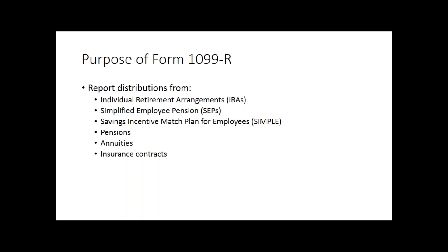Just as a reminder, the 1099-R reports distributions from certain types of plans. The predominant ones we'll see are individual retirement arrangements — IRAs — as well as simplified employee pension plans (SEPs) and SIMPLE plans. All of those are retirement plans held by the employee. We may also see pension plans. A pension is a series of periodic payments made over time or a lifetime, usually in contemplation of retirement from an employer. An annuity is also a series of payments over time, but may typically be purchased outside of a traditional employment context. We'll also see some commercial annuities as well.